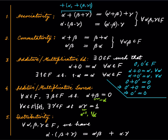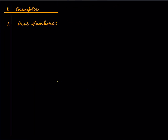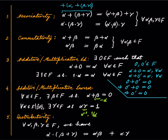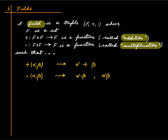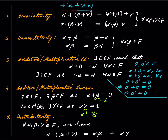So these five properties must be satisfied, and if that happens we call it a field. You can have some set and some arbitrary functions '+' and '·', but if you choose these functions such that all five properties are satisfied, then we say we have a field.